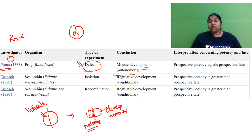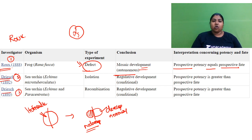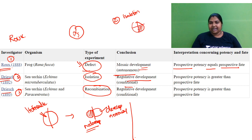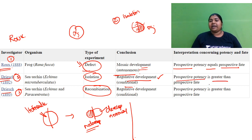The second experiment is the Driesch isolation experiment. He proved regulative development: when he removed a portion from a conditionally developing embryo, the missing part was compensated — because the neighbor gives the signal, not the cell itself. This is regulative development. Here, prospective potency is greater than prospective fate.